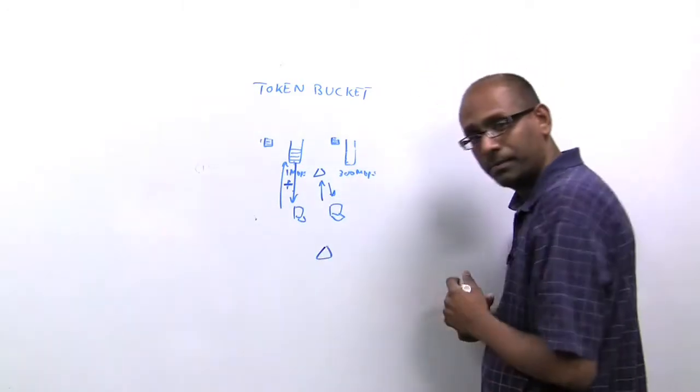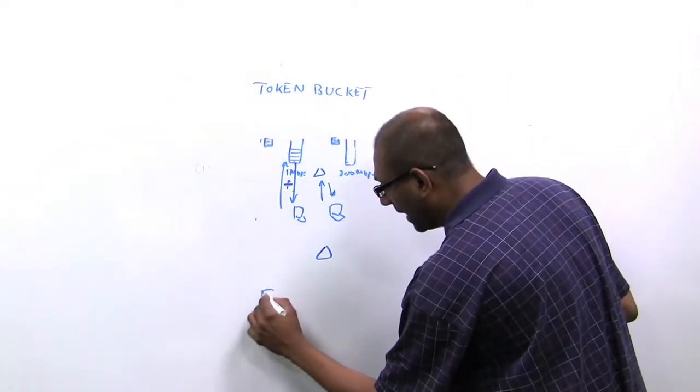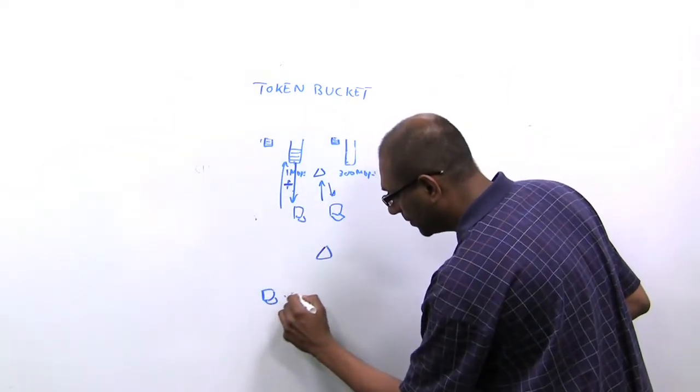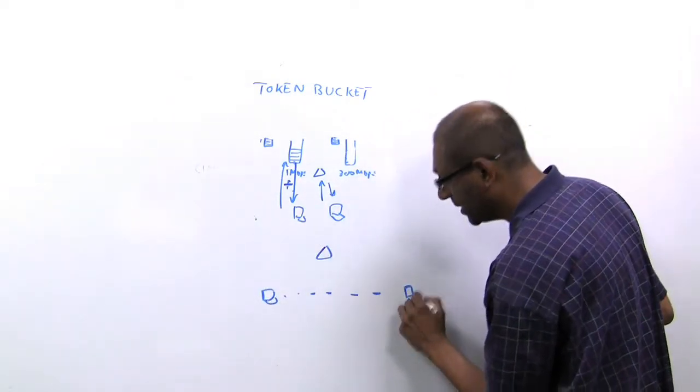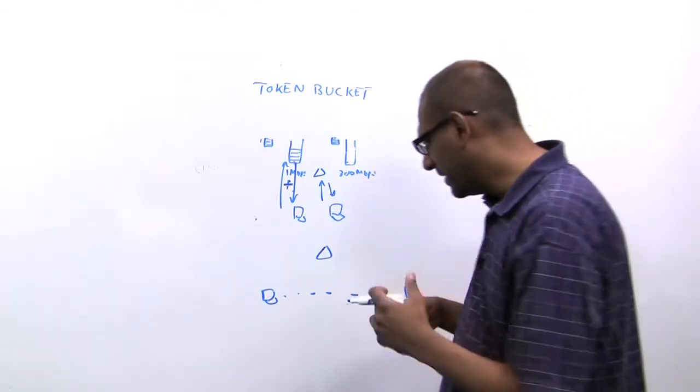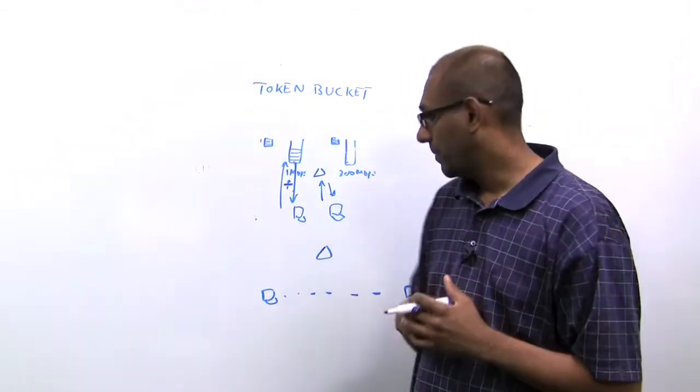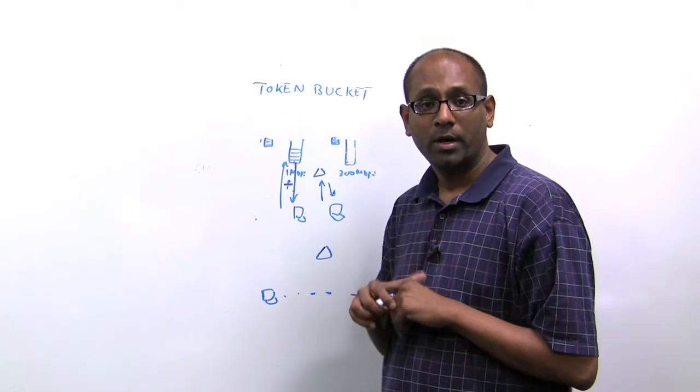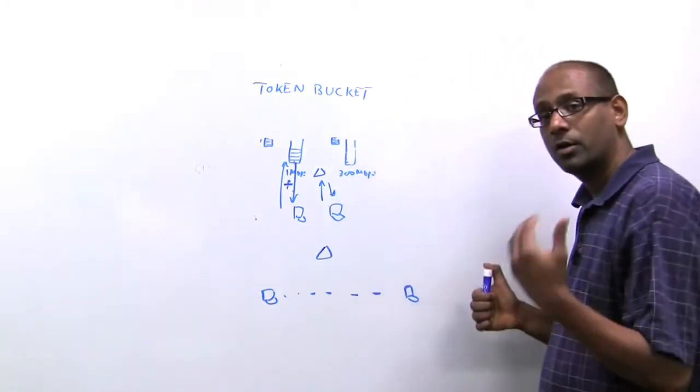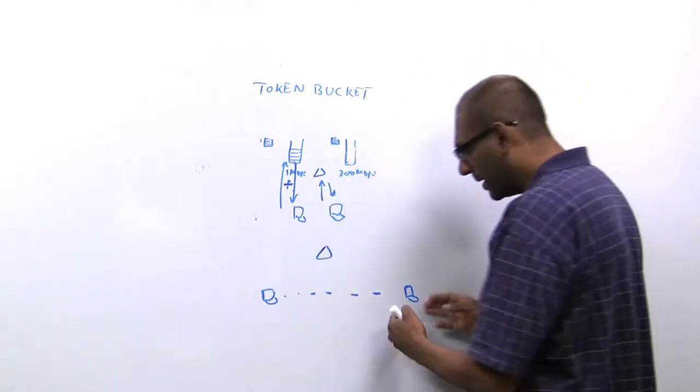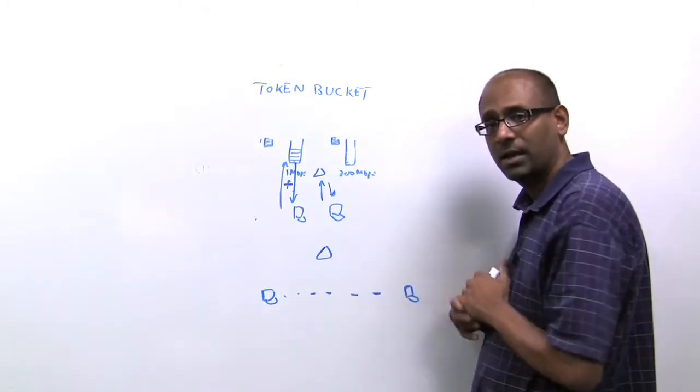Now you have one access point. You might have, in this case I drew two, but obviously you might have 20 devices. And in typically dense environments like a lecture hall or in a library and similar conference rooms, things like that, you might have a large number of devices served by single access point.